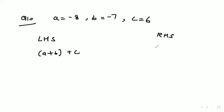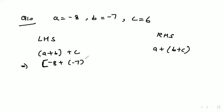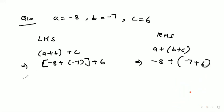LHS equals (a + b) + c and RHS equals a + (b + c), as given in the question. Putting in the values: LHS becomes (-8 + (-7)) + 6, and RHS becomes -8 + (-7 + 6). In the next step, LHS becomes (-8 - 7) + 6, and RHS becomes -8 + (-1).